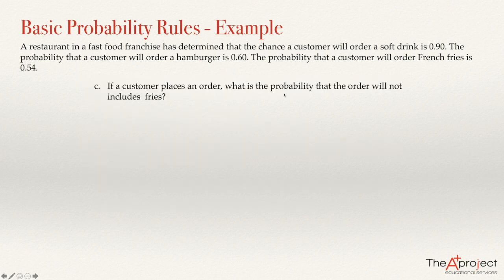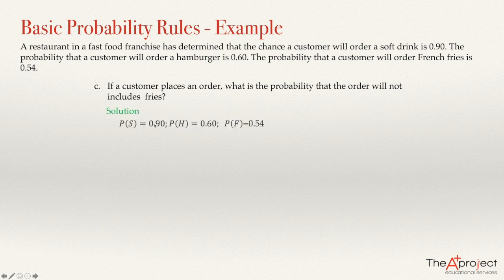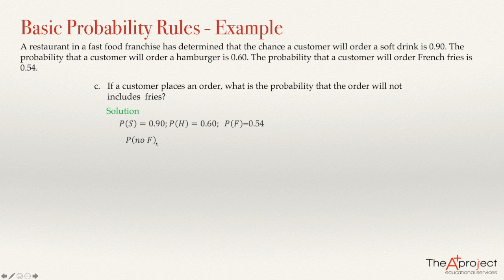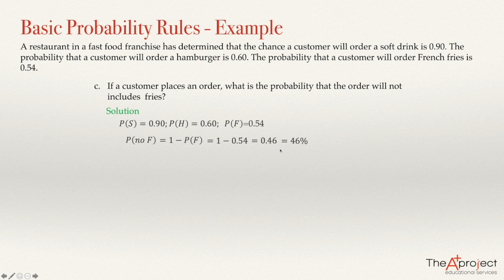If a customer places an order, what is the probability that the order will not include fries? We know P(F) = 0.54. The probability of not ordering fries is 1 minus P(F), so it will be 1 minus 0.54, which equals 0.46 or 46%. That is the probability that the order doesn't include fries.